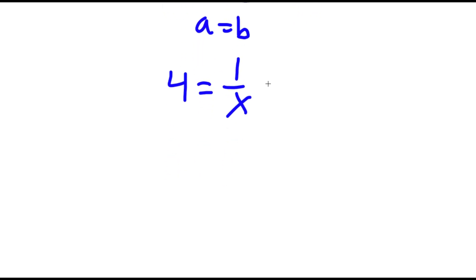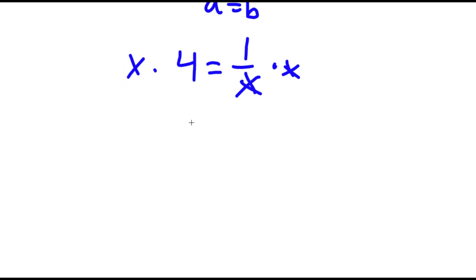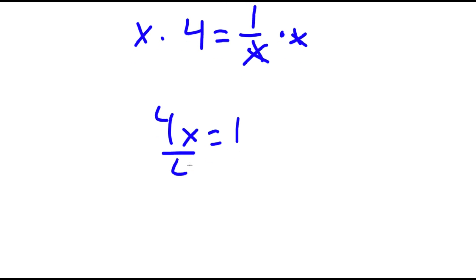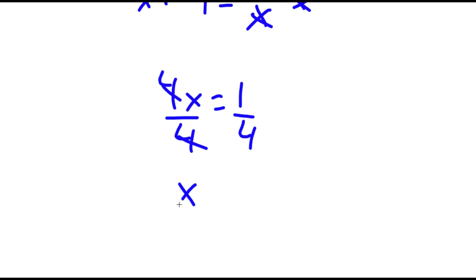Now if I multiply both sides by x, these two cancel out and I get 4x is equal to 1. Now if I divide both sides by 4, I get x is equal to 1 over 4.